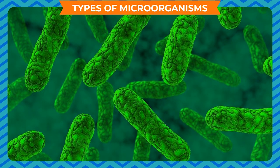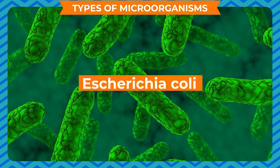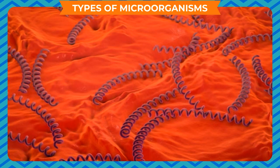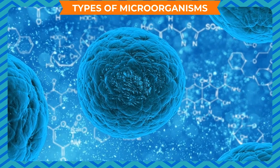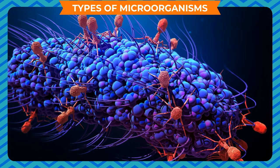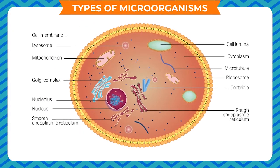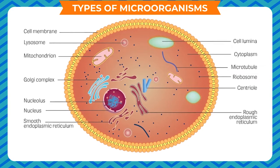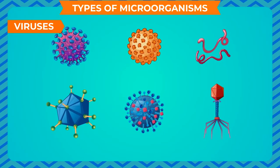Bacteria exist in various shapes. Rod-shaped bacteria are also called bacillus. Spherical-shaped bacteria are called cocci — for example, Staphylococcus aureus. Bacteria have an outer covering called the cell wall. The nucleus is not well organized, and the cytoplasm is colloidal; about 70 to 85% of the cytoplasm is water.